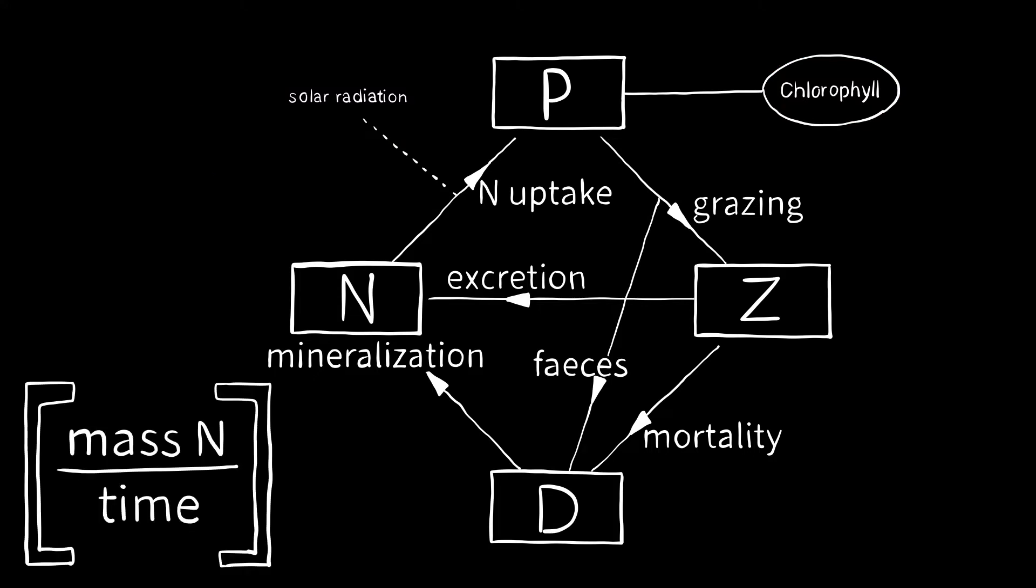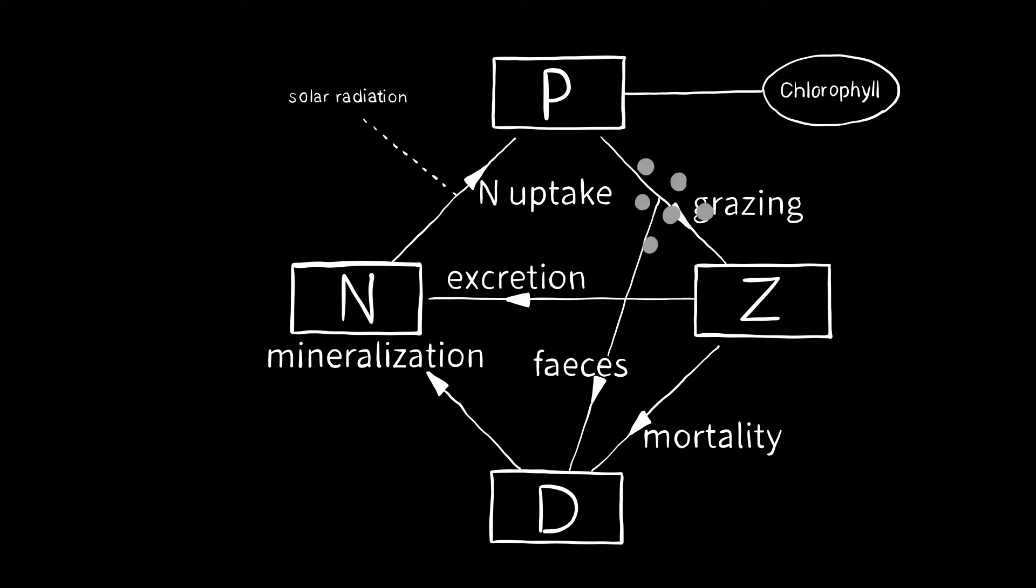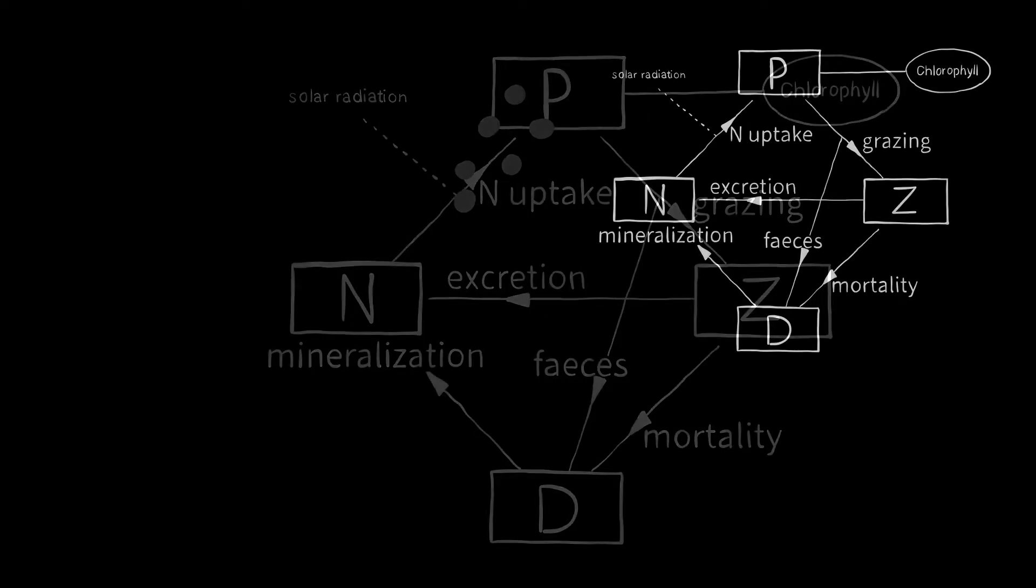These flows are rates, and so they have units of mass, here mass of nitrogen, per unit of time. This system is closed, so mass should be conserved. This means that the change in the sum of all variables should be zero.